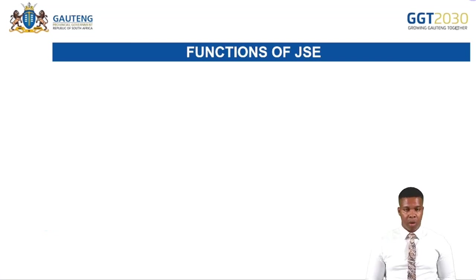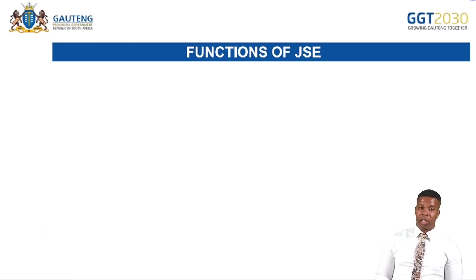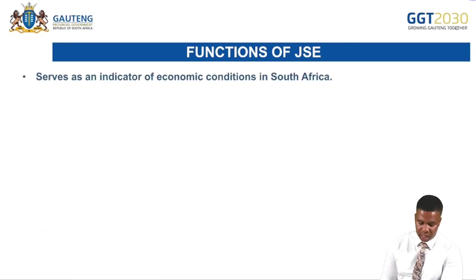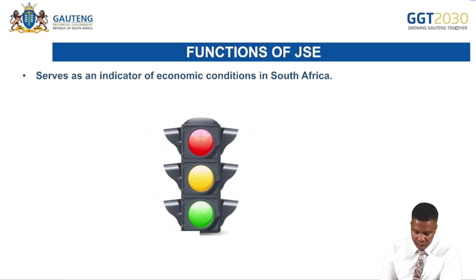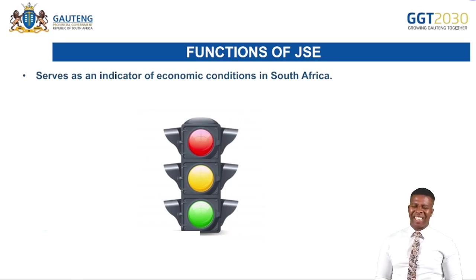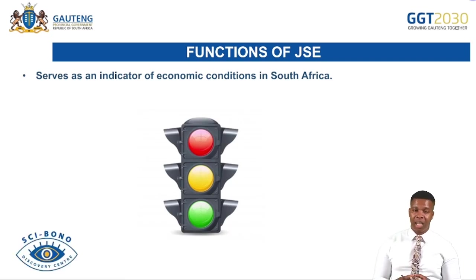We now move into the functions of the JSE. The JSE is a market where public companies that are listed are allowed to sell their shares and attract investors. The JSE is a market where trading of shares occurs between publicly listed companies and investors. One key function is that it serves as an economic indicator in the South African market, giving investors and others an idea of the economic conditions in South Africa.